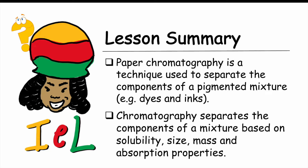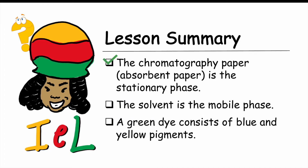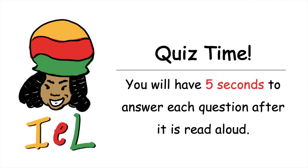The lesson summary points are as follows. Paper chromatography is a technique used to separate the components of a pigmented mixture such as dyes and inks. Chromatography separates the components of a mixture based on solubility, size, mass, and absorption properties. The chromatography paper is the stationary phase, and the solvent is the mobile phase. A green dye consists of blue and yellow pigments.